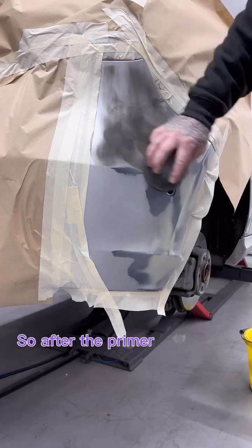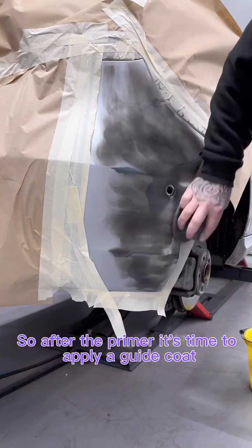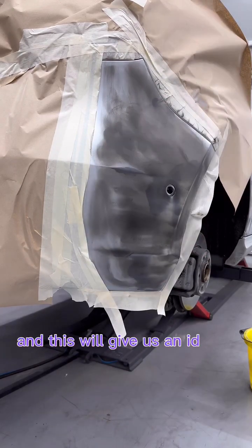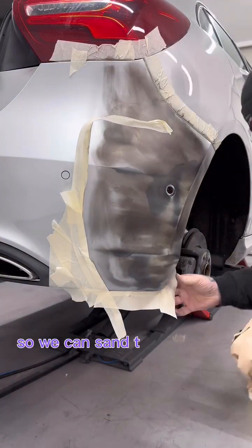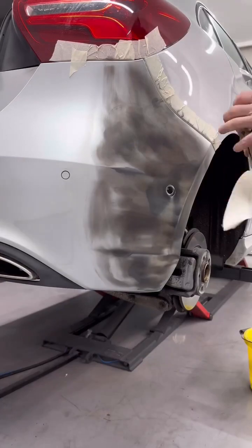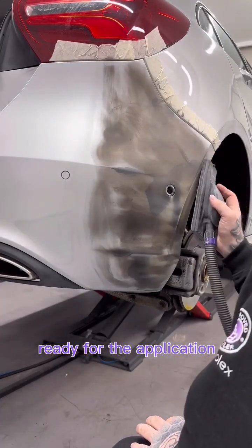After the primer it's time to apply a guide coat and this will give us an idea of the highs and lows within the primer so we can sand those out nice and smooth, ready for the application of base coat.